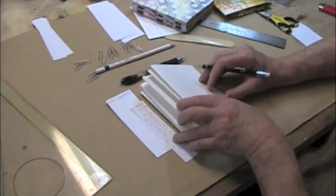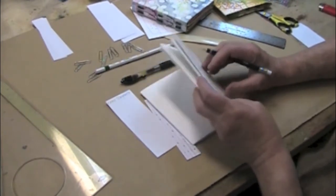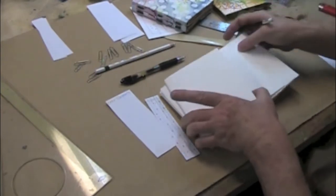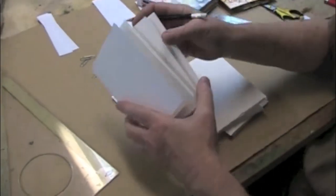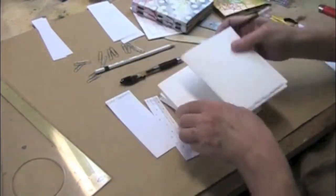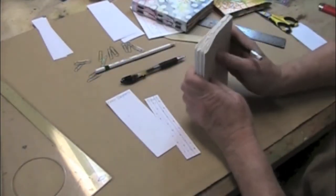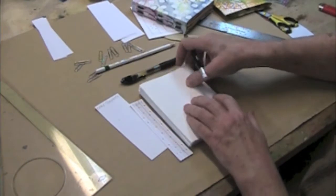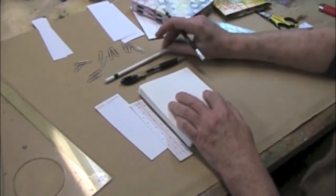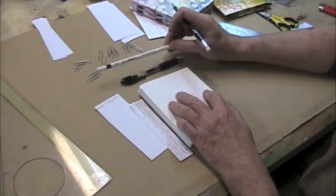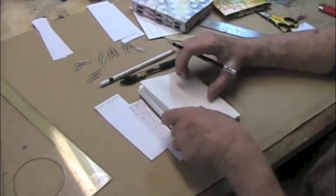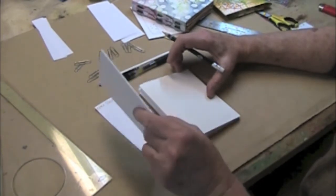So I've arranged my signatures, and I'm going to mark lightly in pencil. If you're working on darker paper you can use a white pencil or a piece of chalk or a colored pencil.